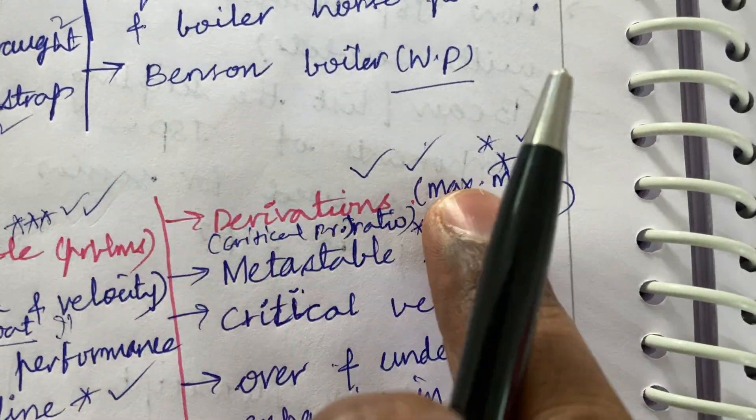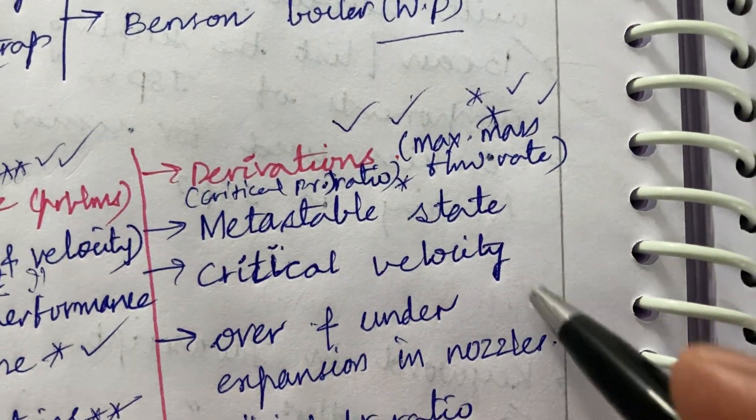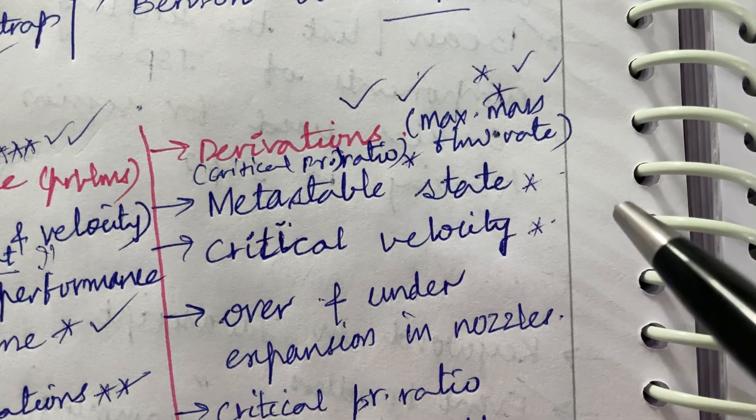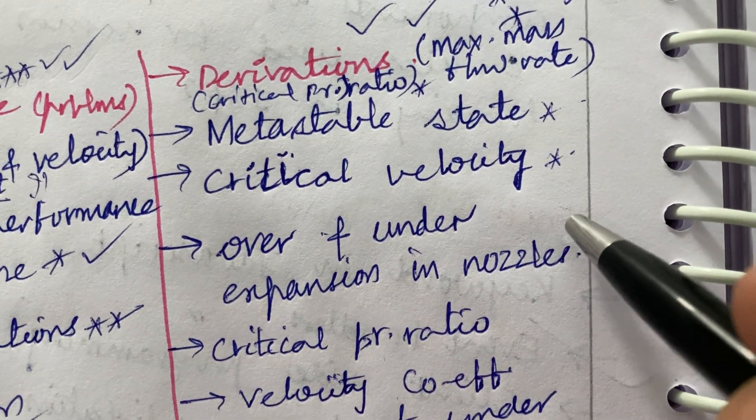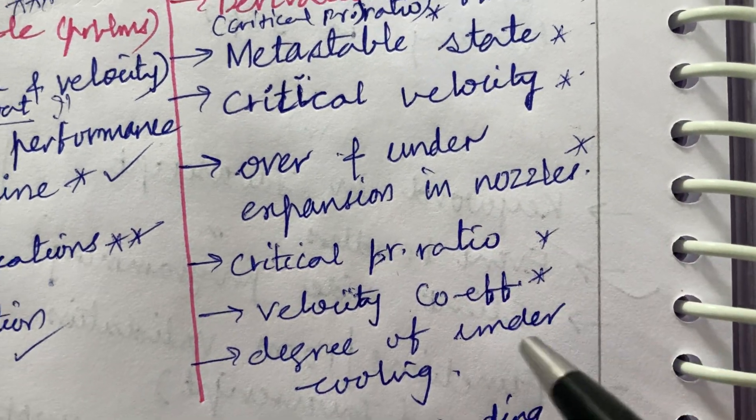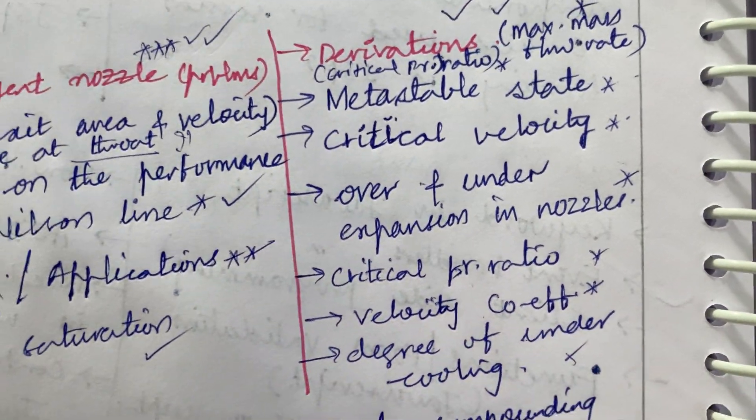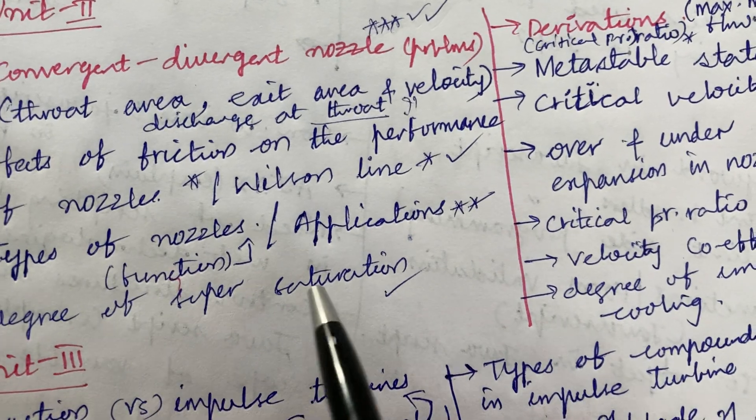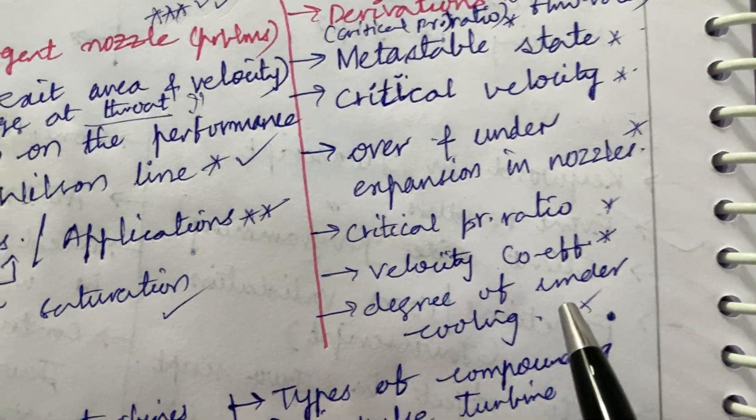If derivations are asked, the derivation will be from this metastable state. Define the term and critical velocity may be the short question. Over and under expansion in the nozzles and the critical pressure ratio, velocity coefficient as well as degree of undercooling may be asking the differences between degree of supersaturation as well as degree of undercooling.